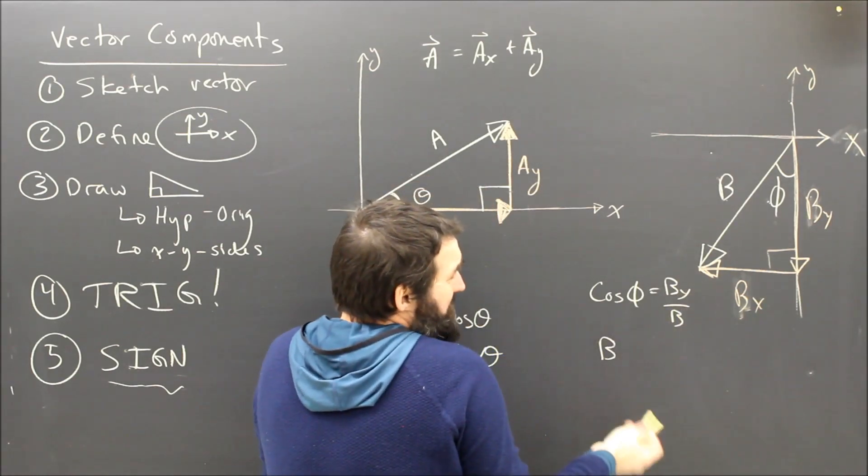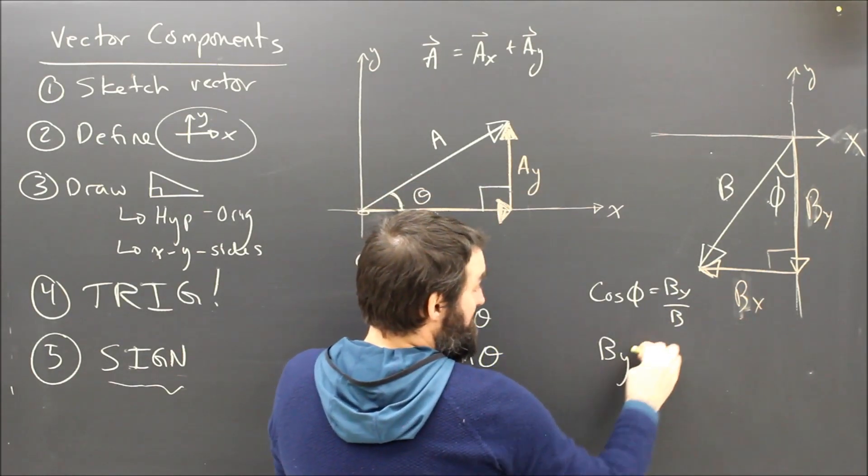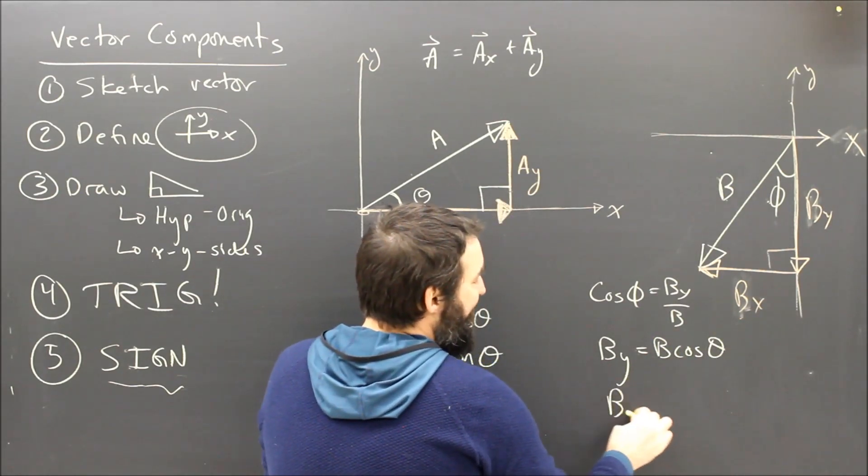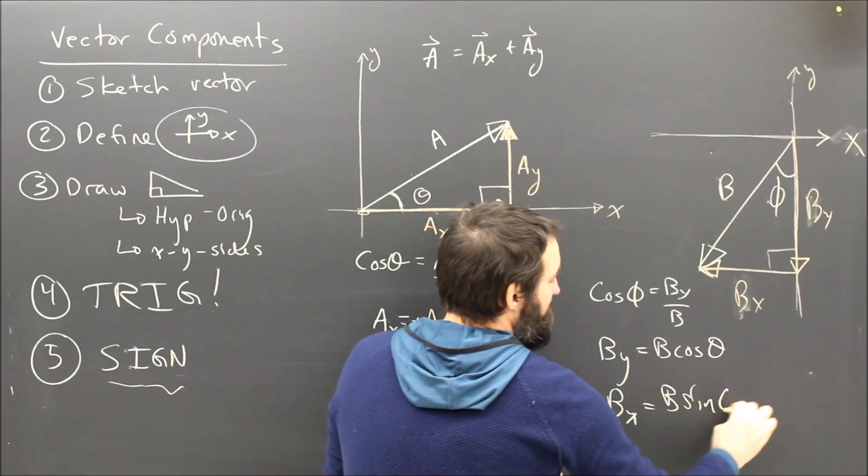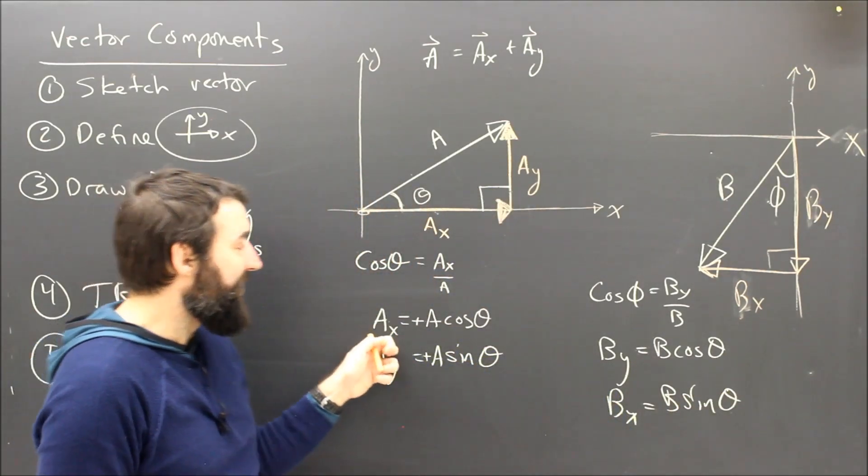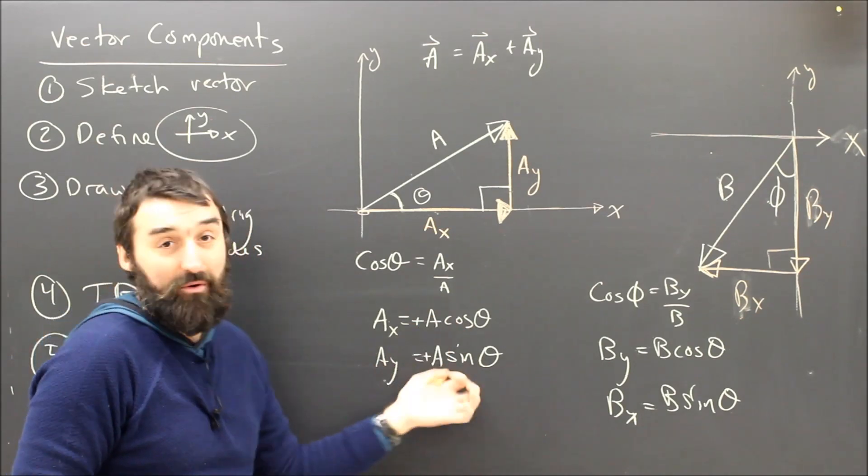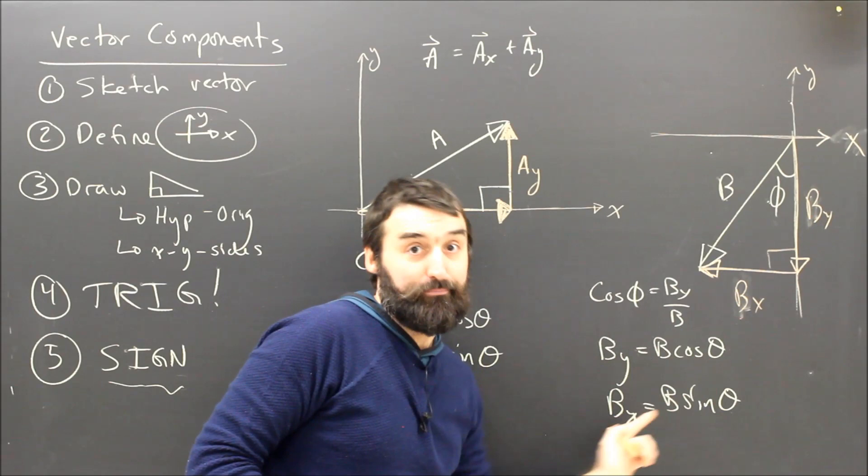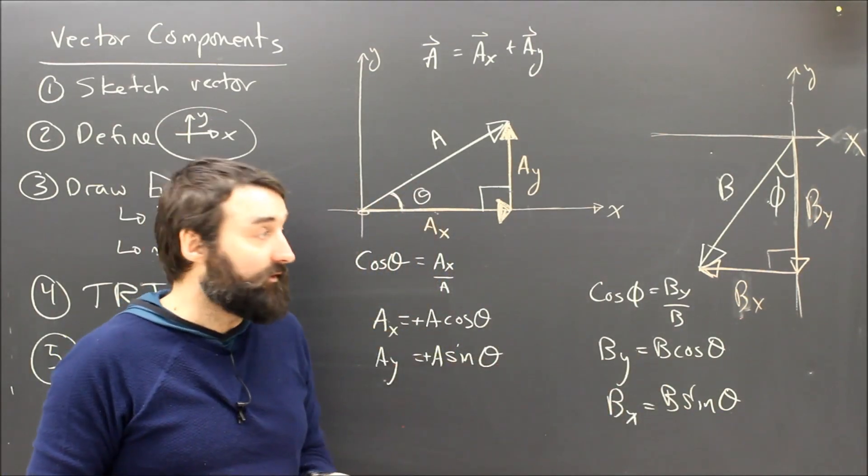So in this case, B equals, sorry, By equals B cos theta. And Bx is going to be B sine theta. So I shouldn't memorize that Ax is always cos and that Ay is always sine. I've got to draw my triangle and then use my trig brain to get the function right, to pick the right trig function.